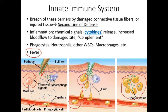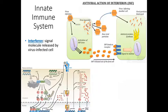Some of our immune system cells function best at a higher temperature, so fever suppresses the invader while enhancing the activity of our cells. You may have heard that if you have a fever, you shouldn't take medicine to suppress it unless it is getting dangerously high. The reason is that a fever is actually a good, helpful process in defending your body. All of the mechanisms discussed so far are generic — they work against bacteria, viruses, protists, or whatever is trying to invade your body.